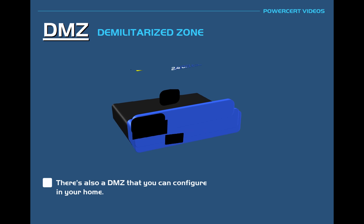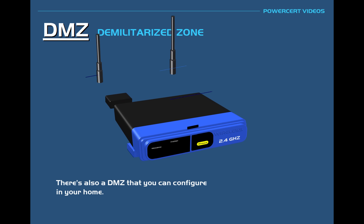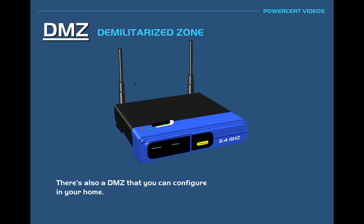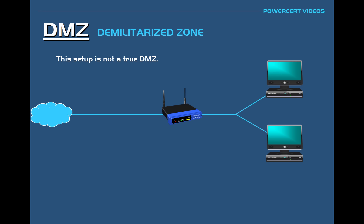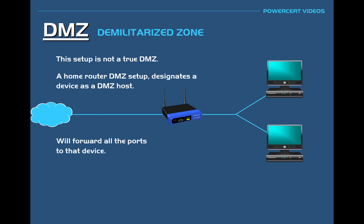There is also a DMZ that you can configure in your home using a typical home router. Those of you who have configured a home router may have seen a section in the advanced settings of the router's configuration page about setting up a DMZ. For example, here are the DMZ setup pages from a Linksys and a Netgear home router. However, this type of setup is not really a true DMZ — it is just setting up a DMZ host, which designates a device as a DMZ host and forwards all ports to that device.